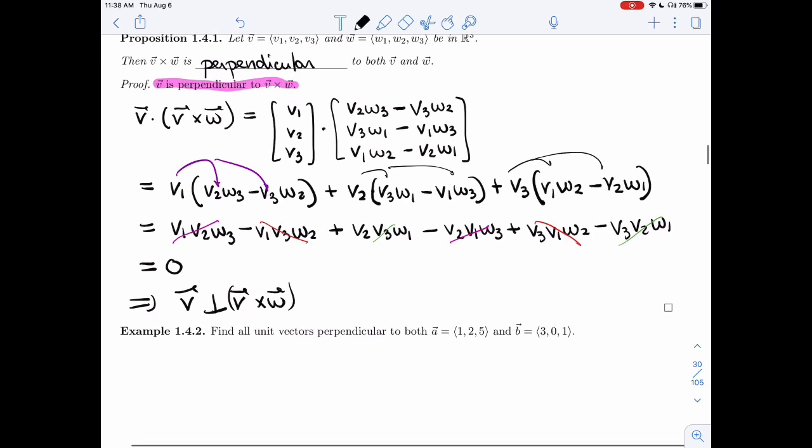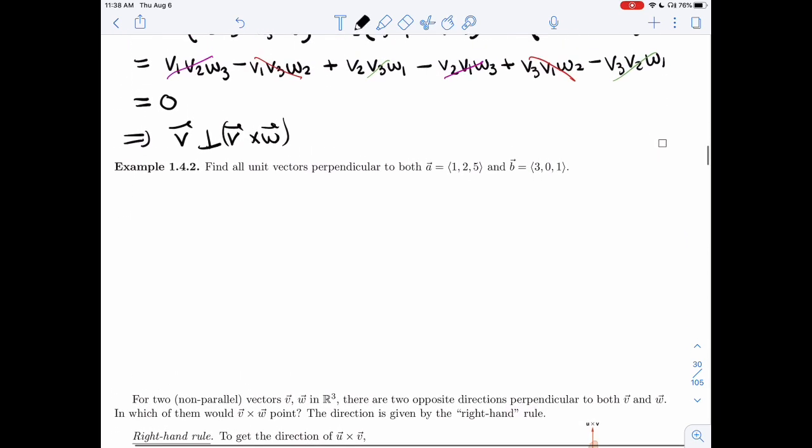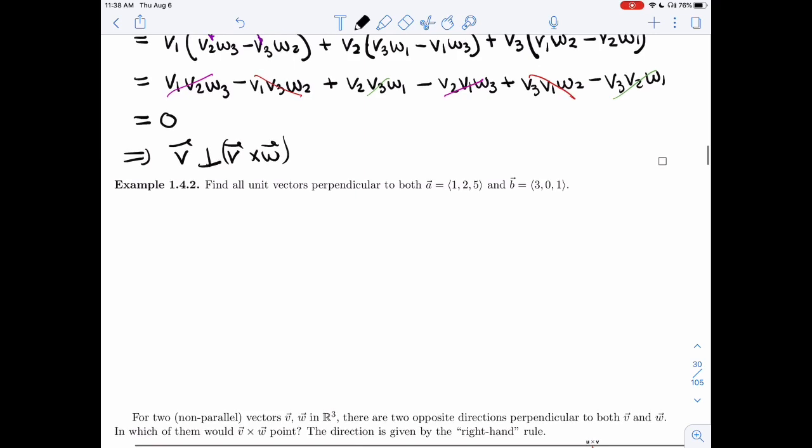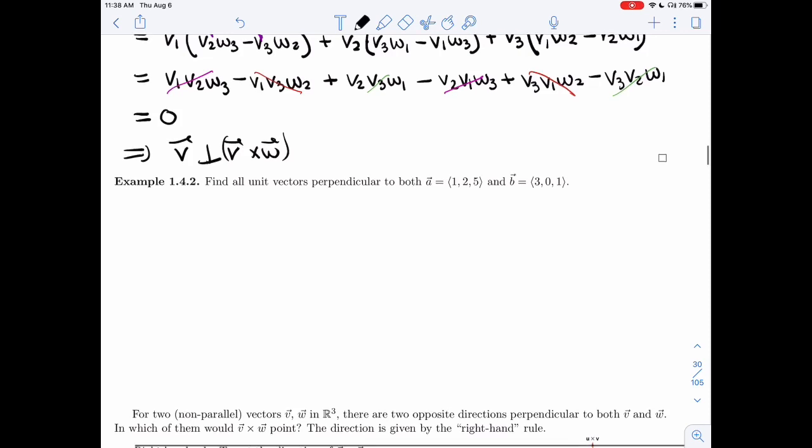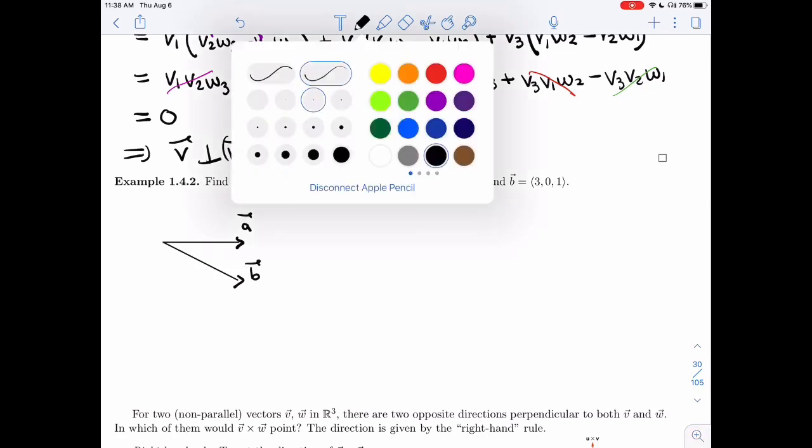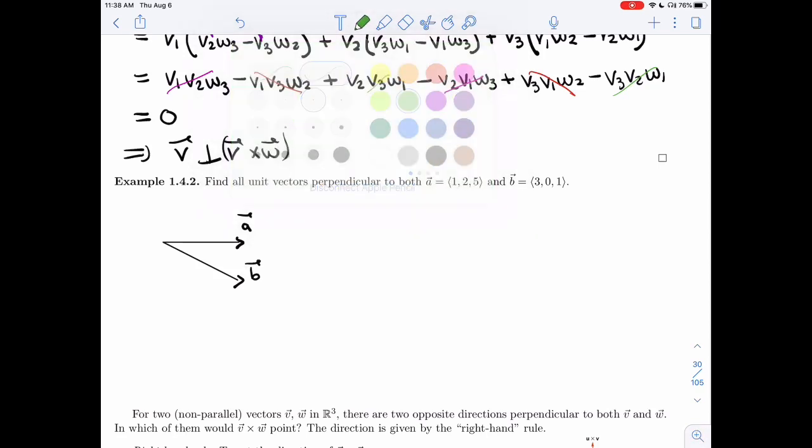Good. Let's do one example here. I have two vectors. I want to find all unit vectors perpendicular to both A and B. So let me draw A and B. Let's say they're here. I have A. I have B. Since they're in R3,